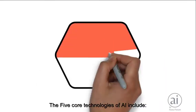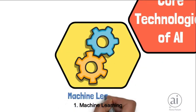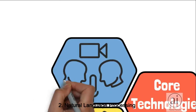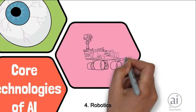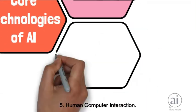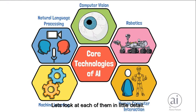The five core technologies of AI include machine learning, natural language processing, computer vision, robotics, and human-computer interaction. Let's look at each of them in a little detail.